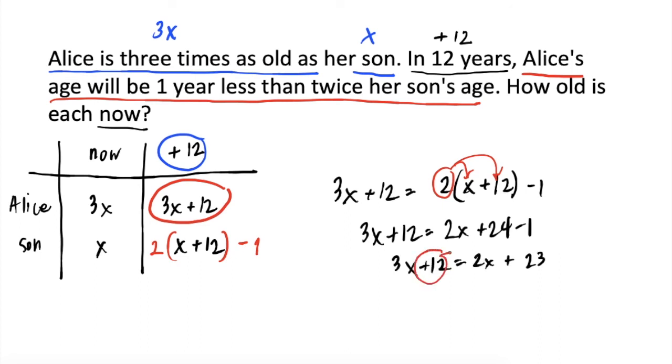Combine like terms. So, ilipat natin ang positive 12 and positive 2x. We will get 3x minus 2x is equal to 23 minus 12. 3x minus 2x, that's x is equal to 23 minus 12, 11. Ito ang age ng son.